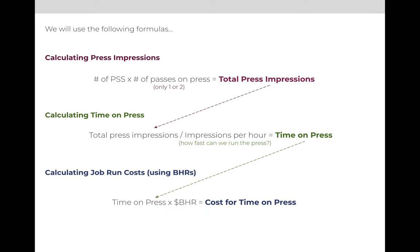It's a little complicated because we have three formulas, and each formula is dependent on the answer to the previous one. So you want to screenshot, print, or copy this slide. In order to calculate the cost for the time on press, our ultimate goal, we are first going to calculate the number of impressions, which is the number of press sheets times the number of passes — it will be one or two. Once we have the total number of impressions, we'll move that value down to the second formula and divide by the speed of the press in impressions per hour. The answer will be the time on press. Then we'll take the time on press and multiply it times the BHR — the budget hourly rate for that press — and that will give us the total cost for that time.